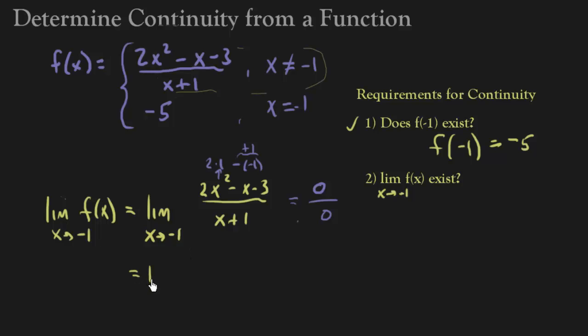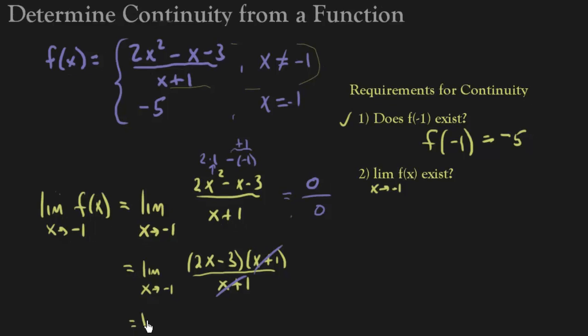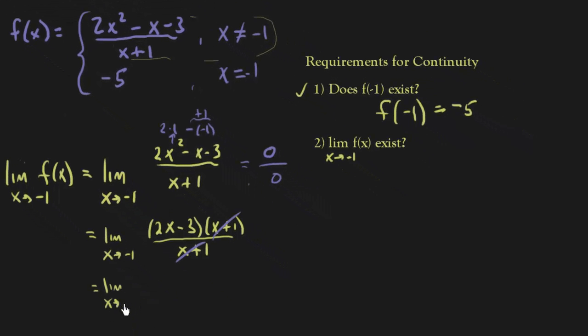How does the numerator factor? Well it's going to factor to be 2x minus 3 and x plus 1, and on the bottom x plus 1. So then, you could do a quick check on this and it should work. So now you see that the x plus 1's will divide out and you're left with the limit as x approaches negative 1 of just 2x minus 3.